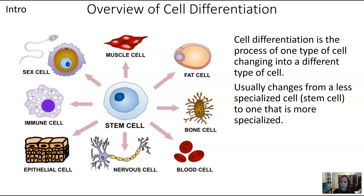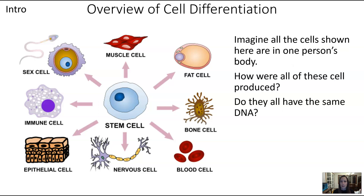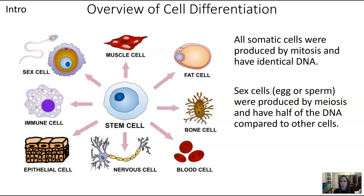You can see a lot of examples here. Imagine all of these cells are in one person's body — how were they all produced? All of the somatic cells were produced by mitosis and have identical DNA. So when we go from the stem cell to muscle, fat, bone, blood, nervous, epithelial, and immune cells, this happens through mitosis and there is identical DNA.